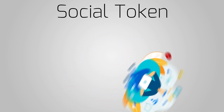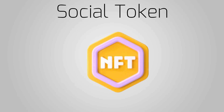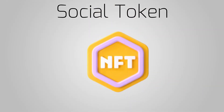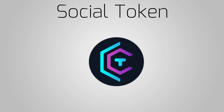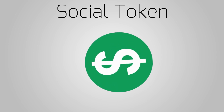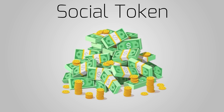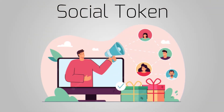Social tokens are similar to non-fungible tokens, NFTs, because they both rely on blockchain technology to confer ownership to their holders. But while NFTs are non-fungible — meaning each NFT has a unique value — social tokens are fungible, meaning each social token has the same value. When buying a social token, purchasers automatically own a piece of value they can sell to others and make money.